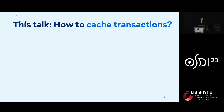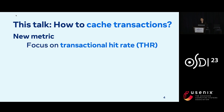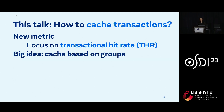The focus of this talk is how do we actually optimize caching for transactions? First, we'll introduce a new metric, transactional hit rate, that precisely captures how much latency improves when caching for transactions. Then we'll introduce our novel system, Detox, that optimizes for transactional hit rate. The idea behind our system is simple: we want to cache the groups of keys that are accessed together by transactions, and I'll go into detail for how we do this grouping.